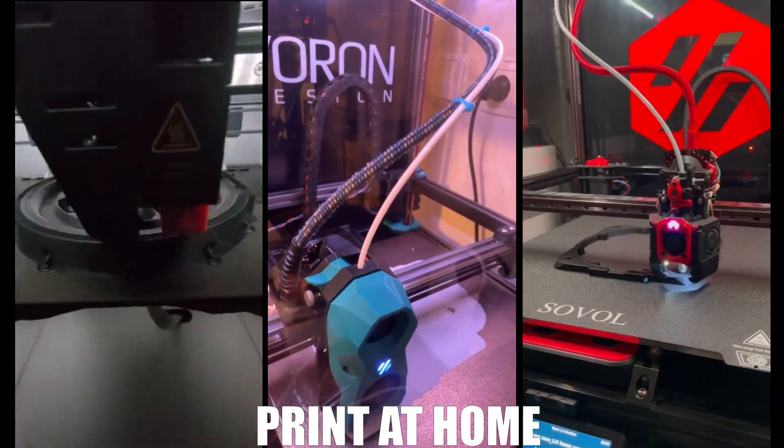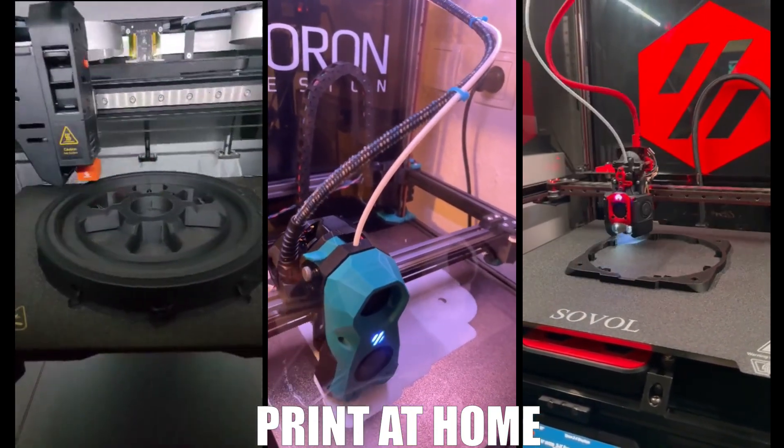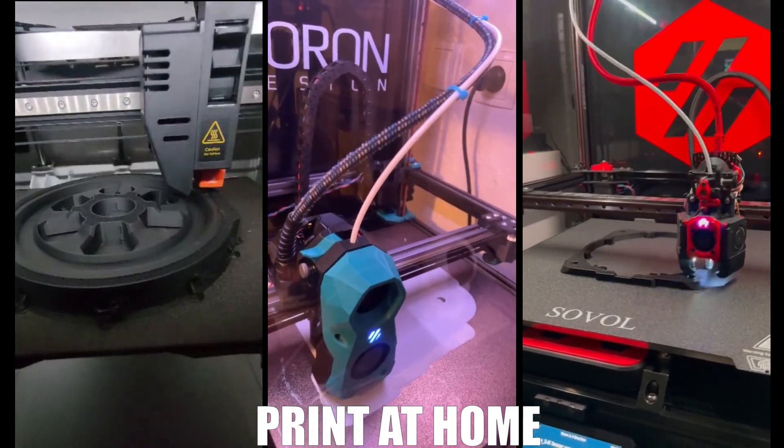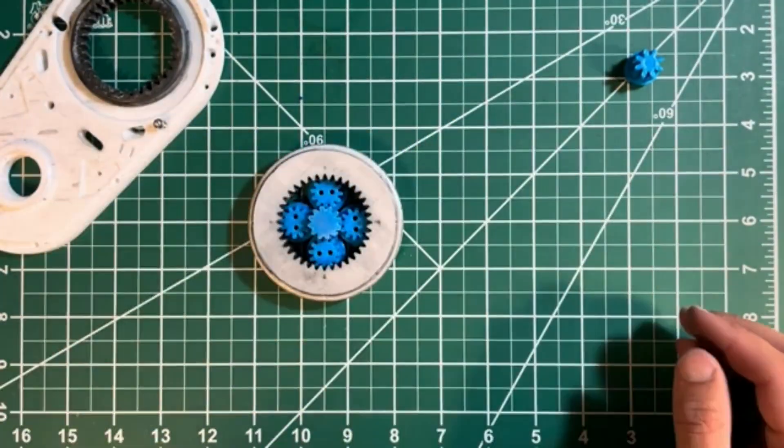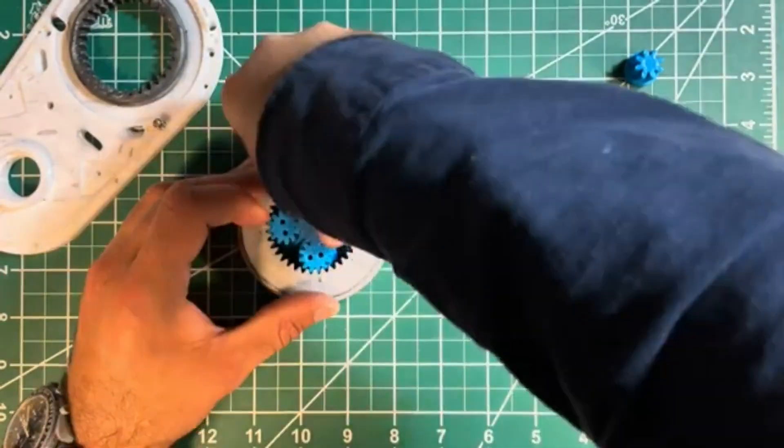This entire robotic arm starts with just plastic filament and your 3D printer. Every single piece clicks together like advanced Lego. No welding, no machining, no special tools. If you can build IKEA furniture, you can build this robot.